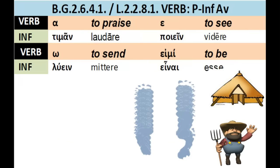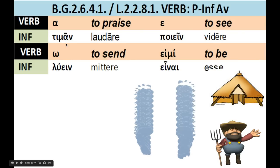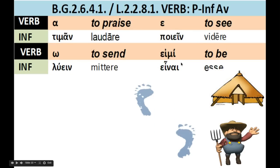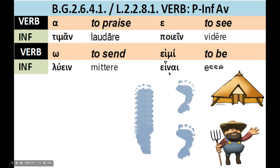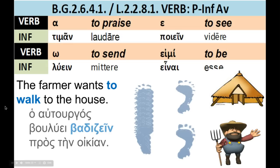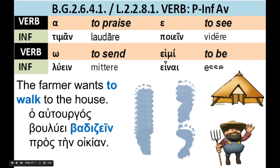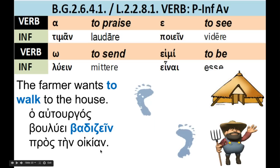We also need to look at the infinitive. The infinitive is -ane: lue-ane. For alpha contracts, it's -ane. For epsilon contracts, it's -ane. And the infinitive of 'ane' is 'to be.' Notice: the infinitive simply doesn't have a person or number — that's why it's called infinitive. It's translated as 'to.' So, 'the farmer wants to walk to the house.' It has to be subordinate to another verb: 'the farmer wants to walk toward the house.'